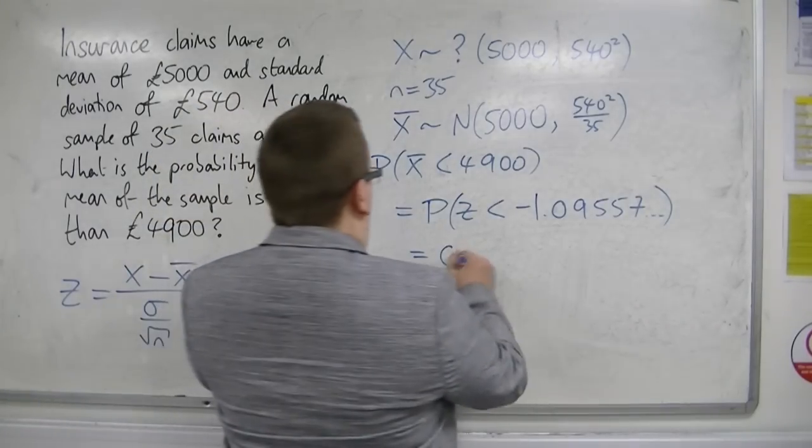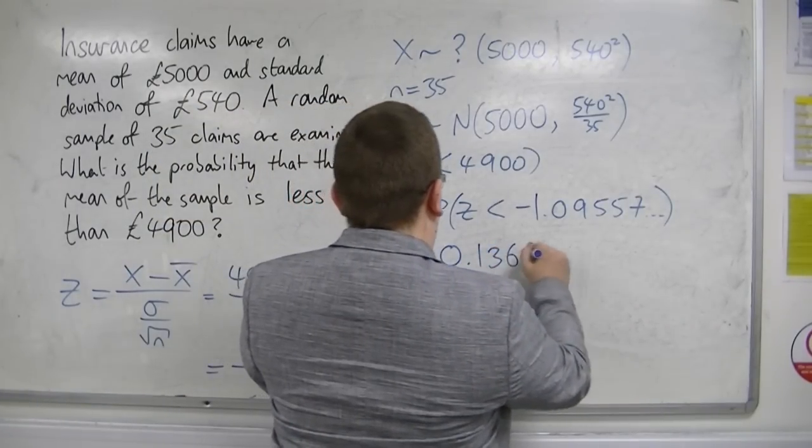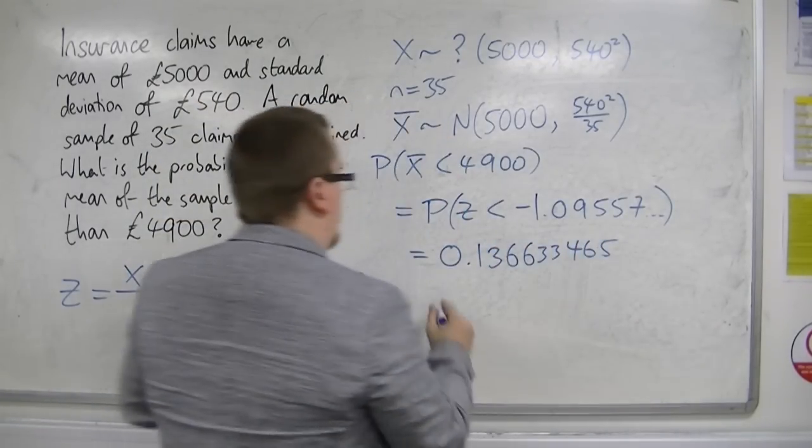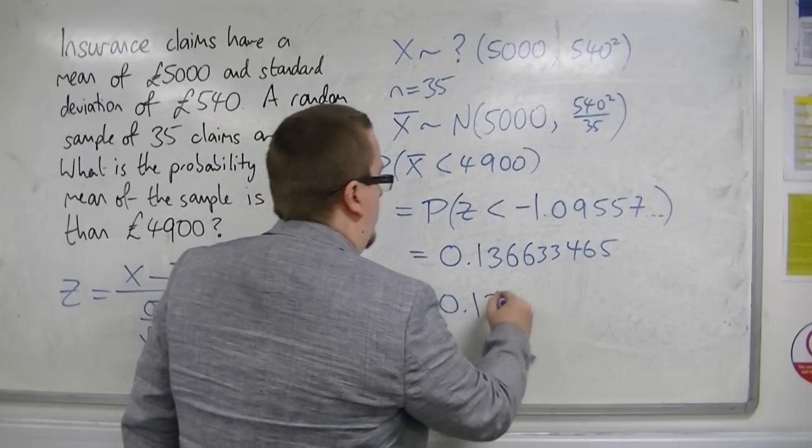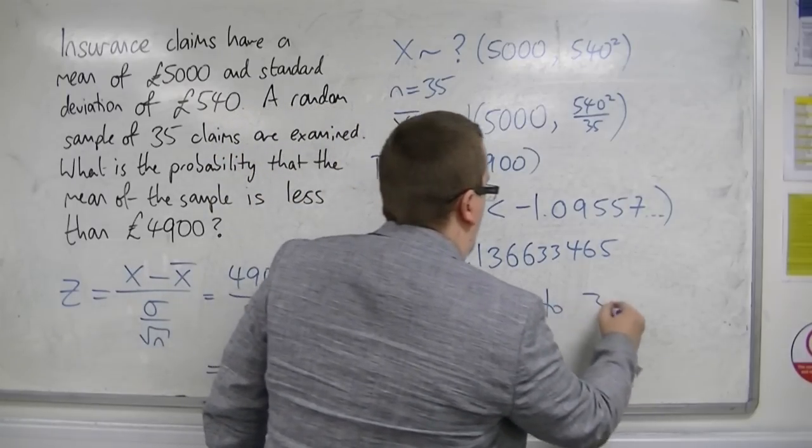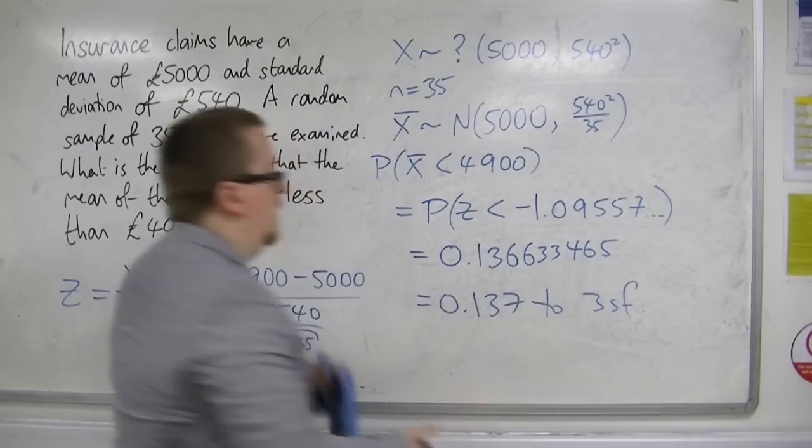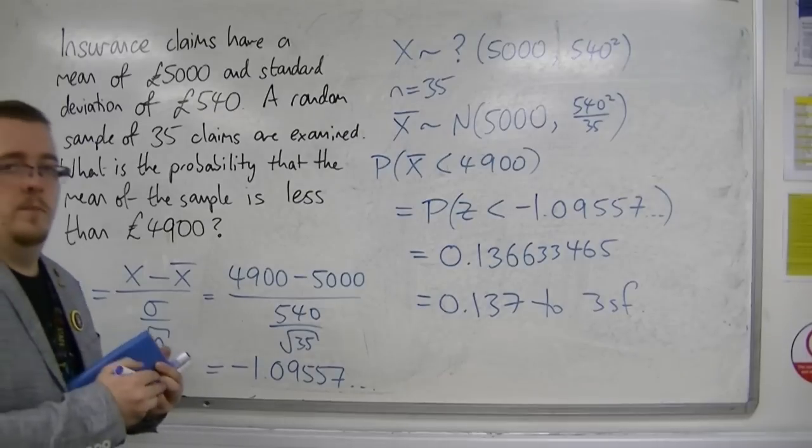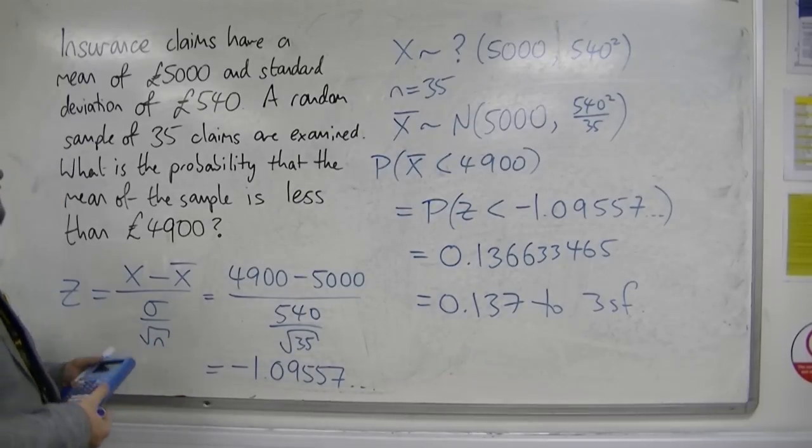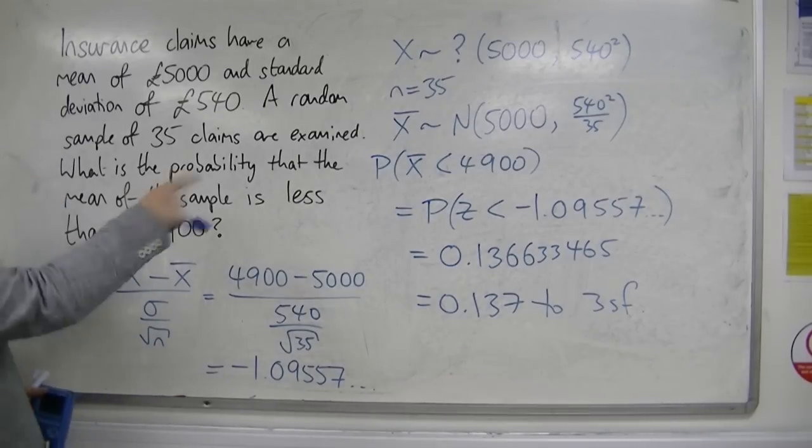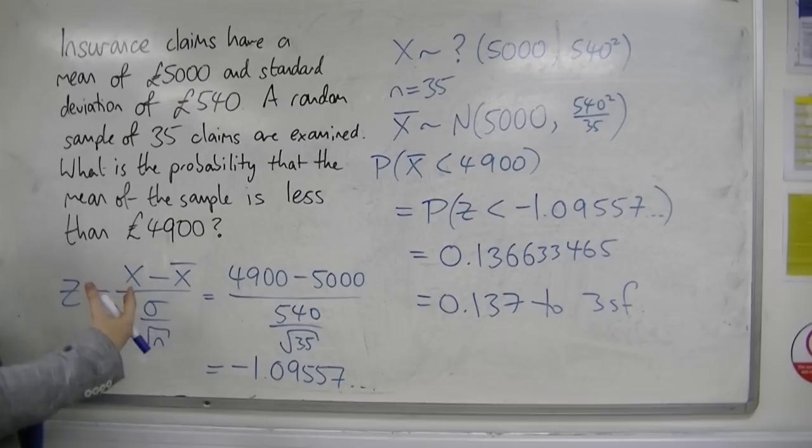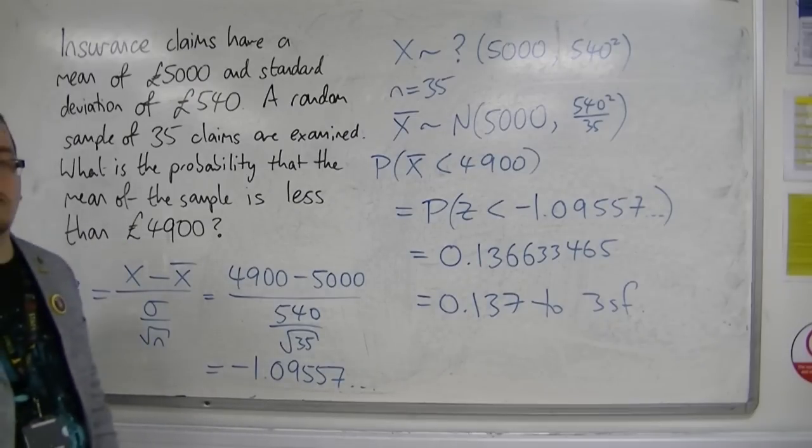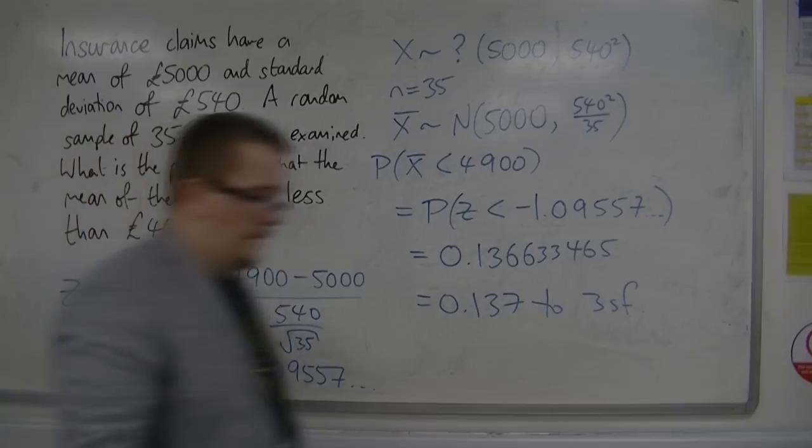So I get 0.136633465. So 0.137 to three significant figures, about 13.7%. That would be the probability that I take a sample of 35 and the mean will be less than £4,900.